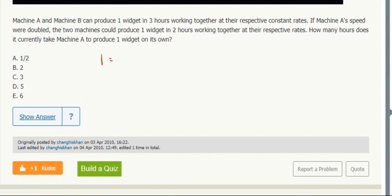Machine A and B can do one widget in three hours, so divide by three, that rate is one third. Then they could do one widget in two hours if A's speed were doubled: two RA plus RB, okay.